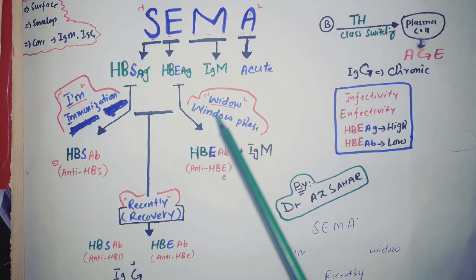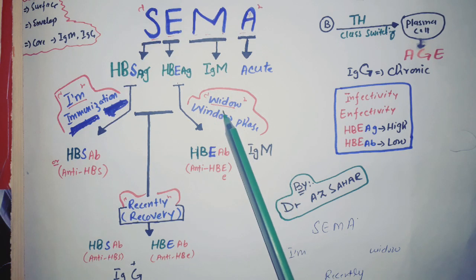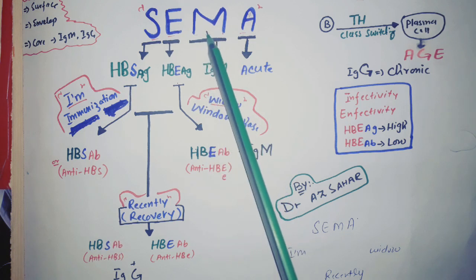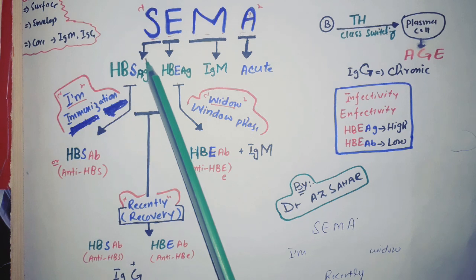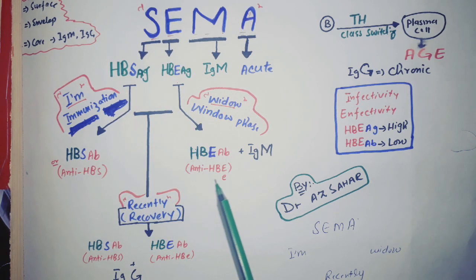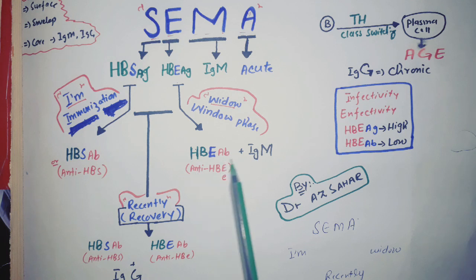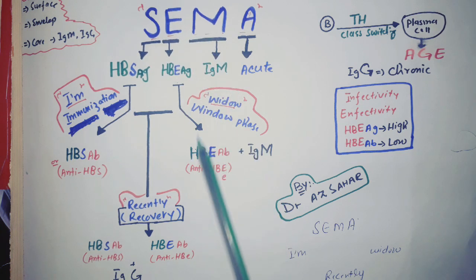If we produce antibodies against the E antigen, it becomes the window phase. E is very close to M in the mnemonic, so we associate it with IgM, because the window phase occurs before the 6th month, coming very near to acute infection. That's why in the window phase we see IgM. So the window phase markers are anti-HBe plus IgM.